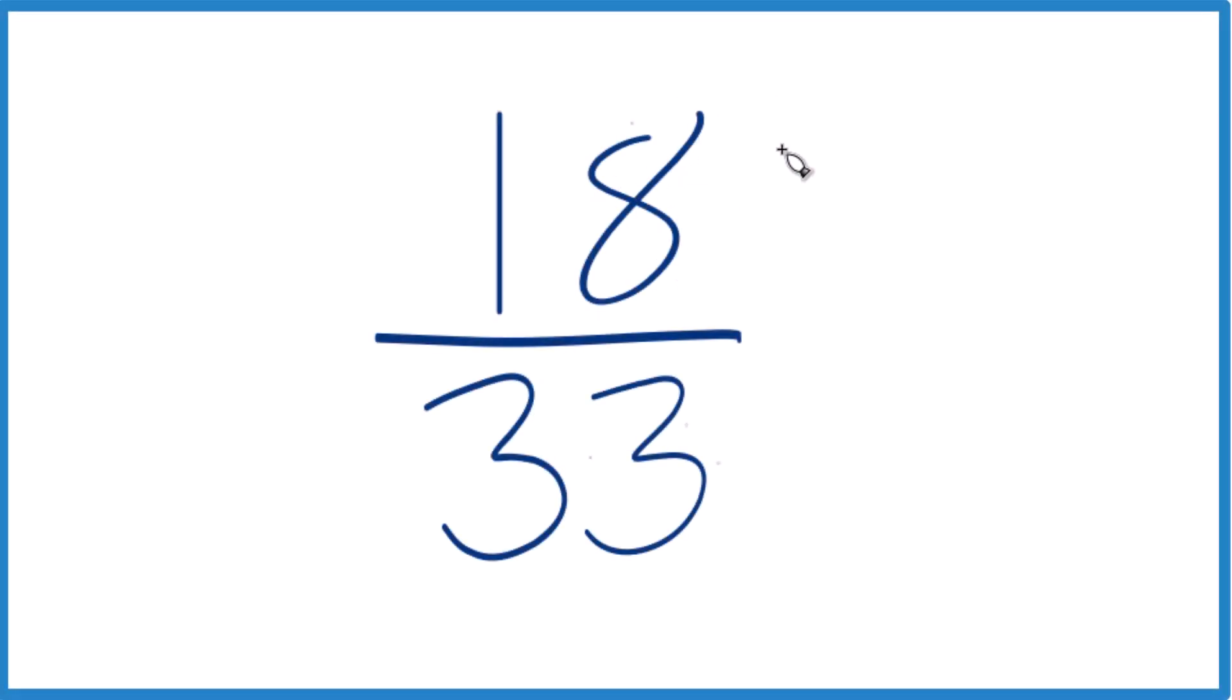Here's how you can simplify the fraction 18 over 33. What we want to do is find a common factor, a whole number that goes into both 18 and 33 evenly.